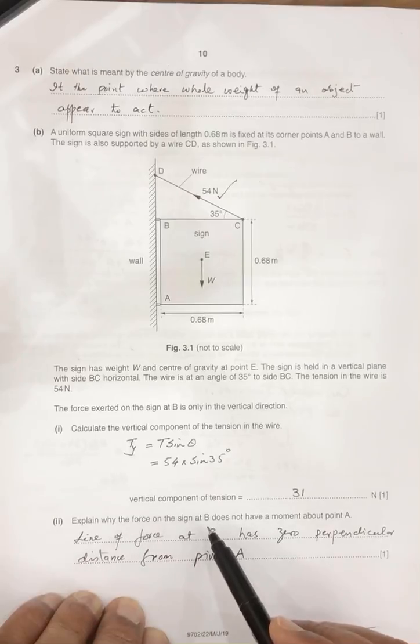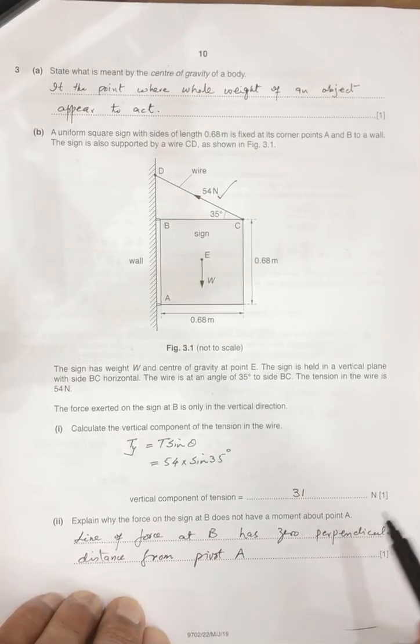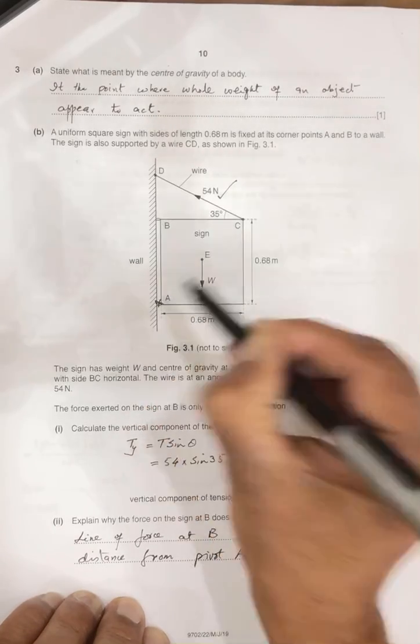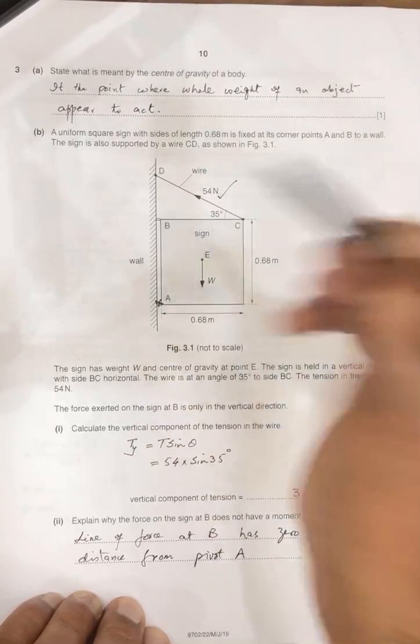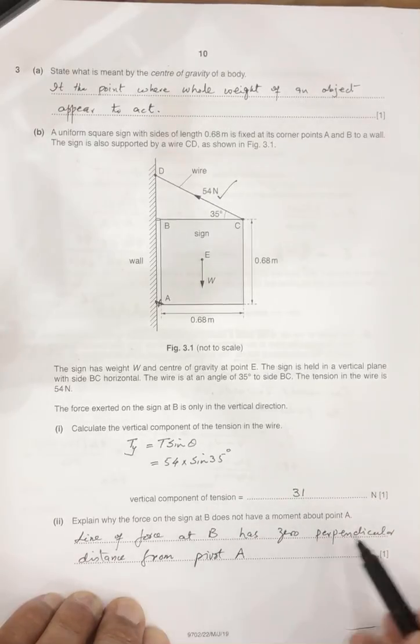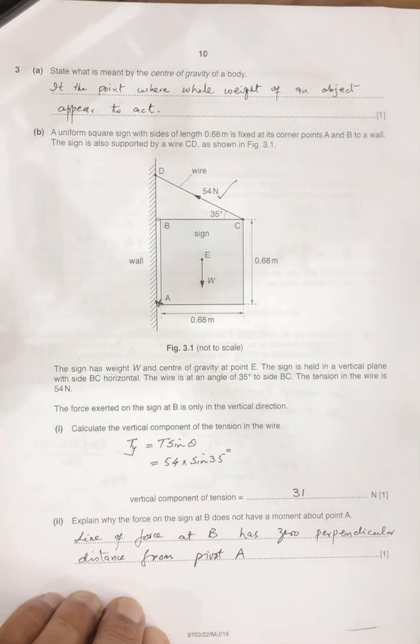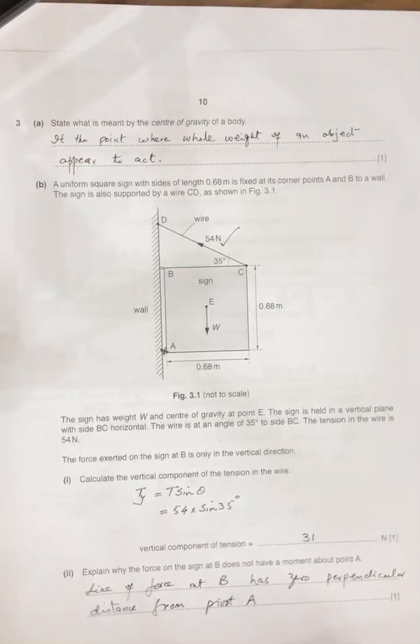Explain why the force on the sign at B does not have the moment about A. If this is the pivot, any force acting at the B has no perpendicular distance from the point A, so when perpendicular distance is 0, so its turning effect, its moment is 0.